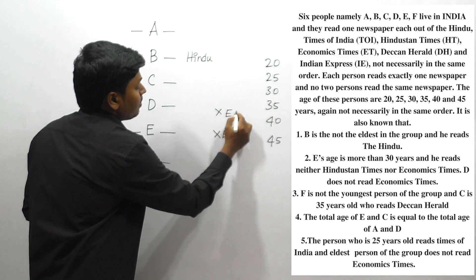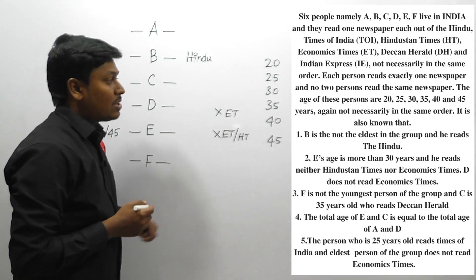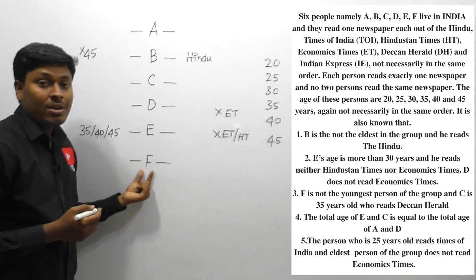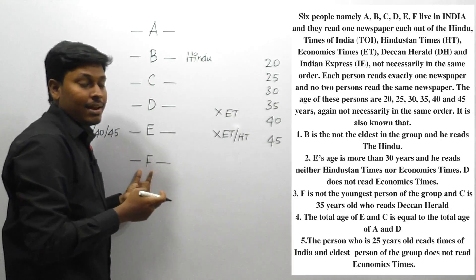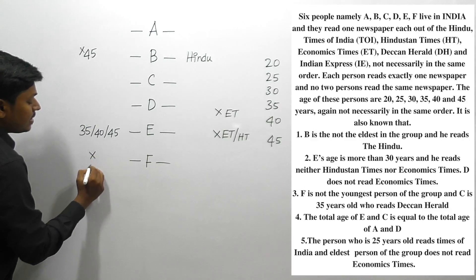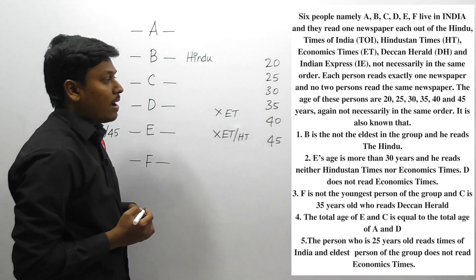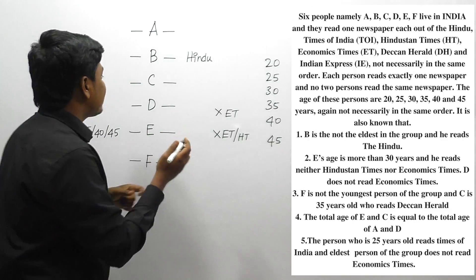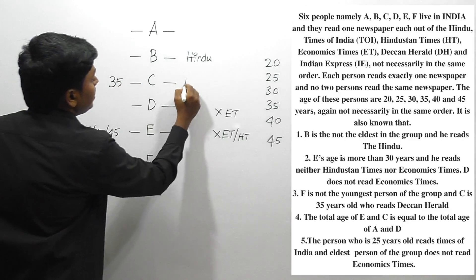Point number three: F is not the youngest person. Since the youngest age is 20 and F is not the youngest, F will not be age 20. Also, C is 35 years old and reads Deccan — this is a direct statement. So C is 35 years old and reads Deccan Chronicle.